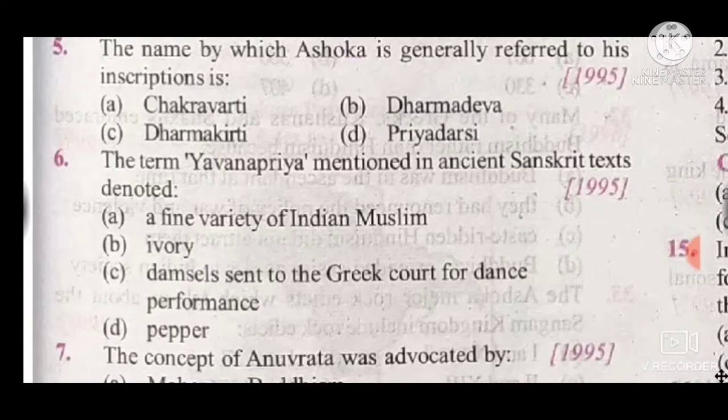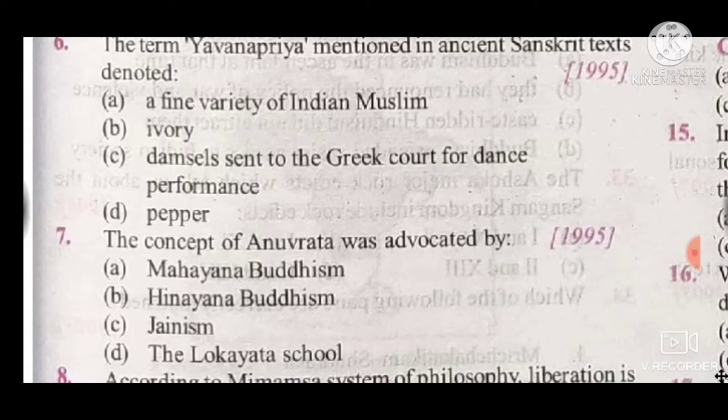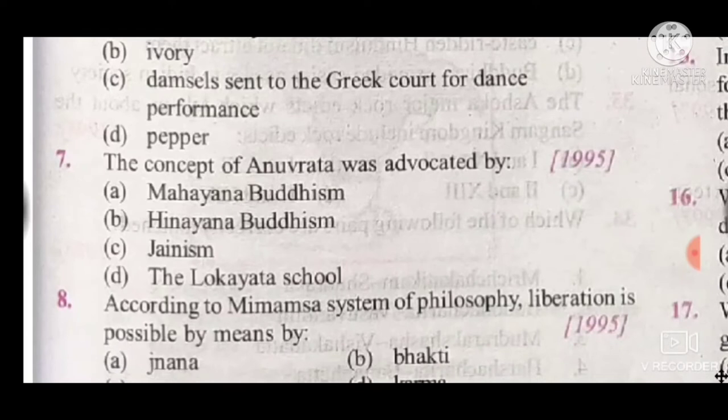Question 7: The concept of 'Anuvrata' was propounded by — the correct answer is C, Jains. Question 8: According to the Mimamsa system of philosophy, liberation is possible by means of — the answer is D, Karma.